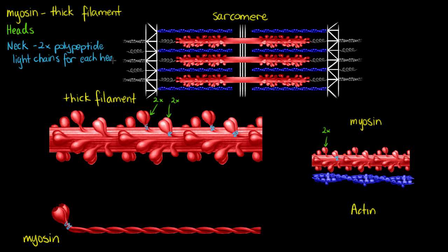The last region on individual myosin molecules is the tail. The tail is going to help act as an anchor to the thick filament. The tail is going to be coiled and in an alpha helical shape. So if we have all of these coiled tails of individual myosins linking together within the thick filament, we are going to be forming a very solid structure — which is exactly what we need to perform the task of muscle contraction. All of these tails link together to create this large structure that is the thick filament.